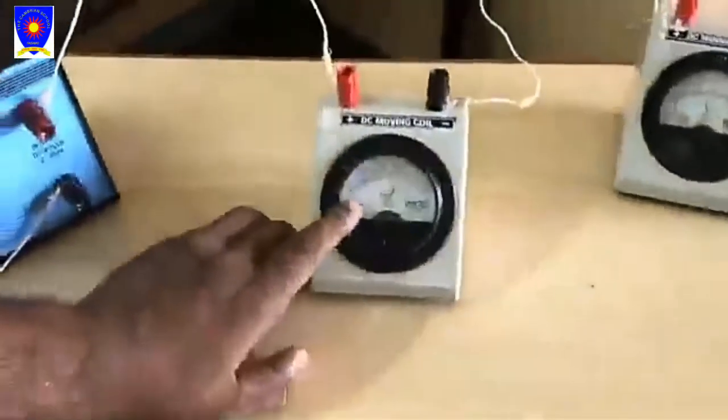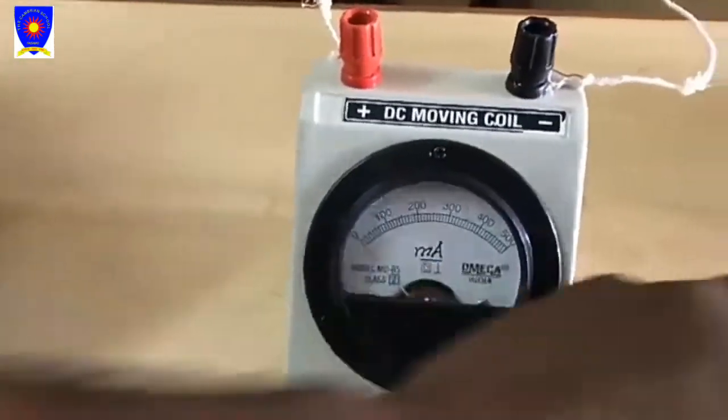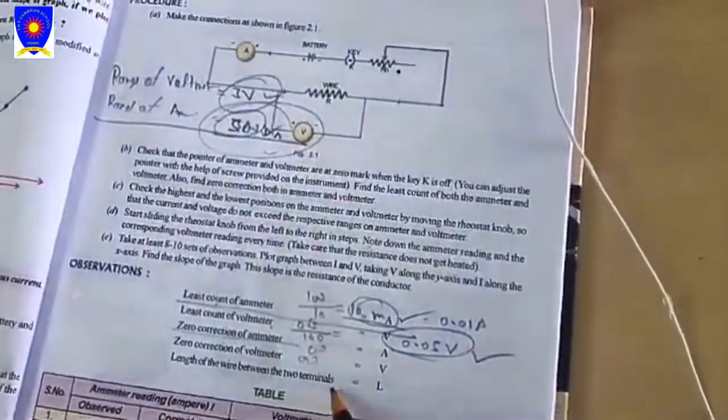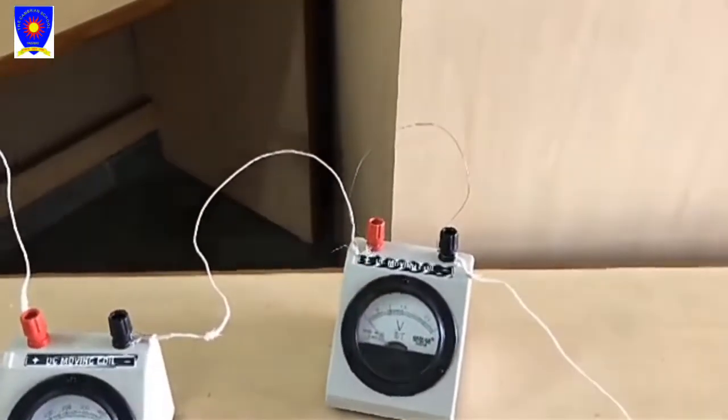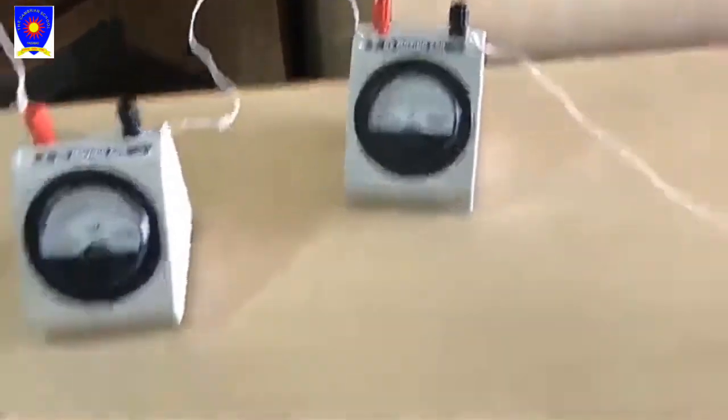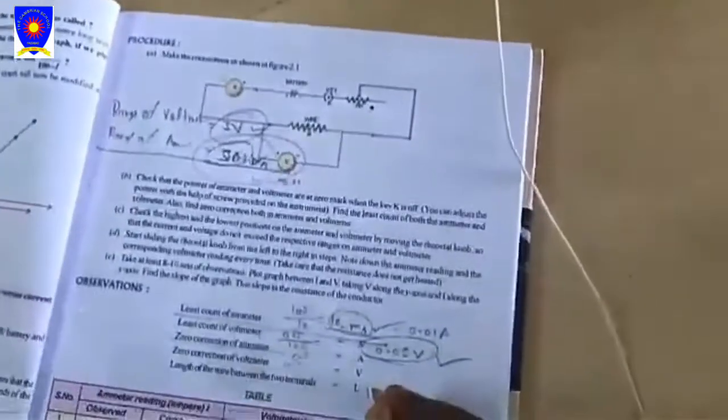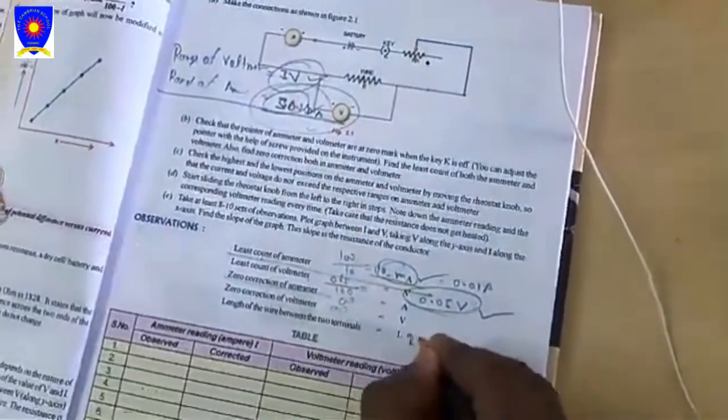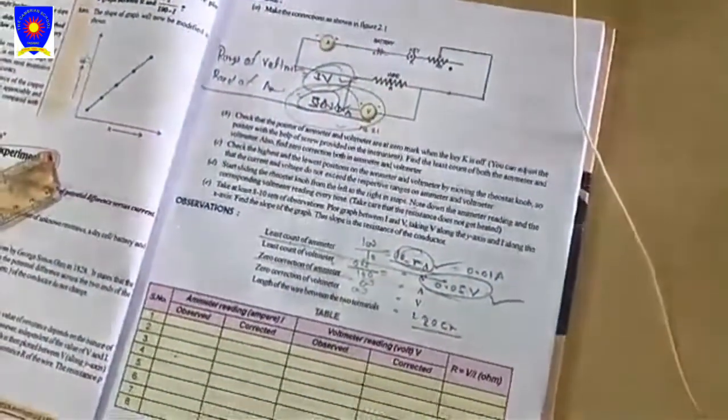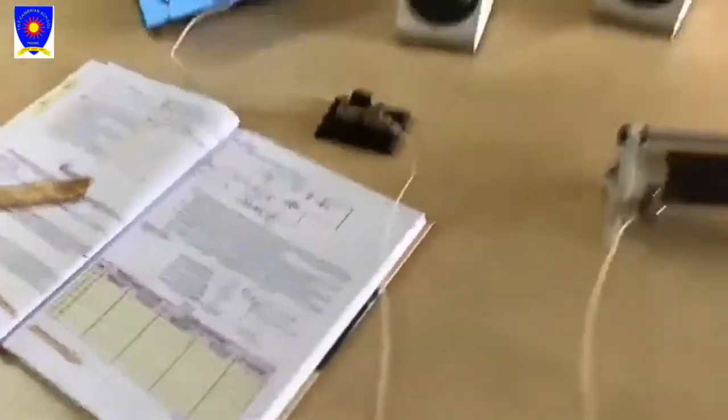What is zero correction? Because there is no error in milliammeter and in voltmeter also, zero correction is zero. Length of the wire between the two terminals - this is wire and its length we have measured with the help of meter scale, and we have found it is 20 centimeter. Now we have to perform this practical.